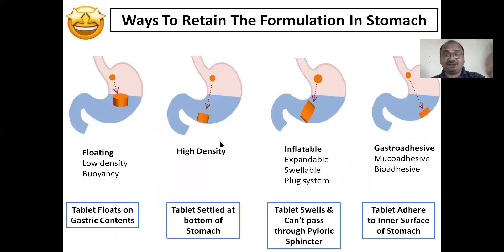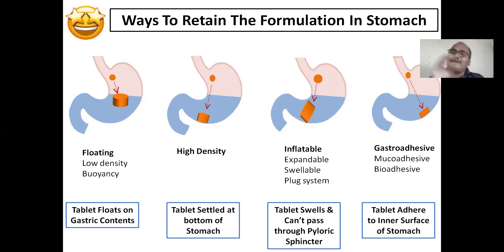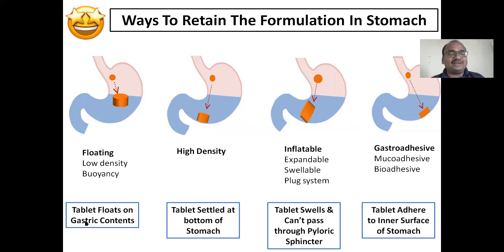The biggest limitation is the two-hour gastric emptying time. There are four approaches in your syllabus. First is floating — the tablet floats on the GI contents. It becomes swelled on the gastric fluid and starts floating, remaining in the stomach. Even after gastric emptying, some liquid always remains in the stomach and the tablet keeps floating. This is also called a low density system, or BONC — tablet floats on the gastric contents.